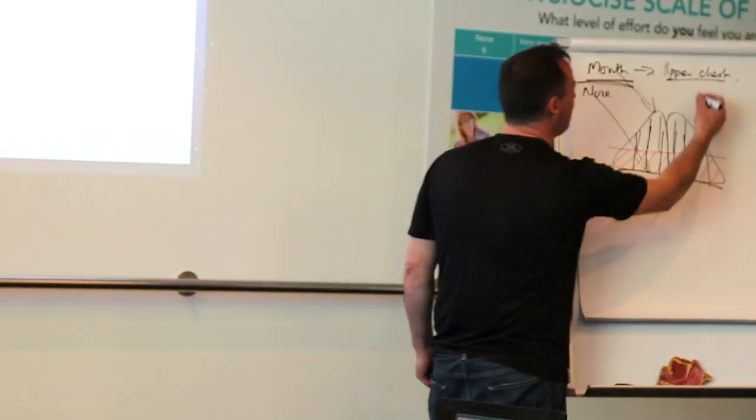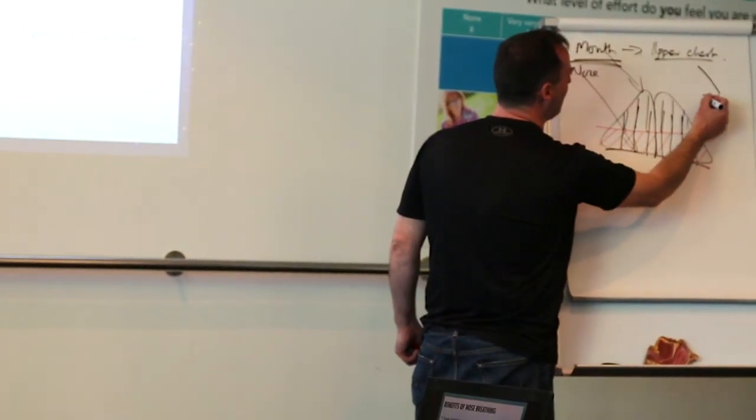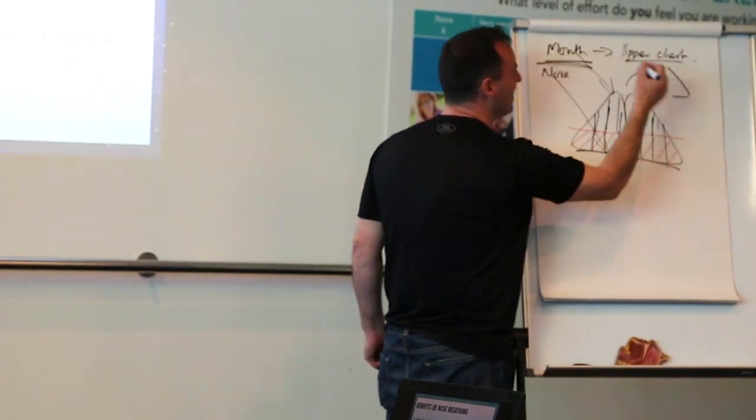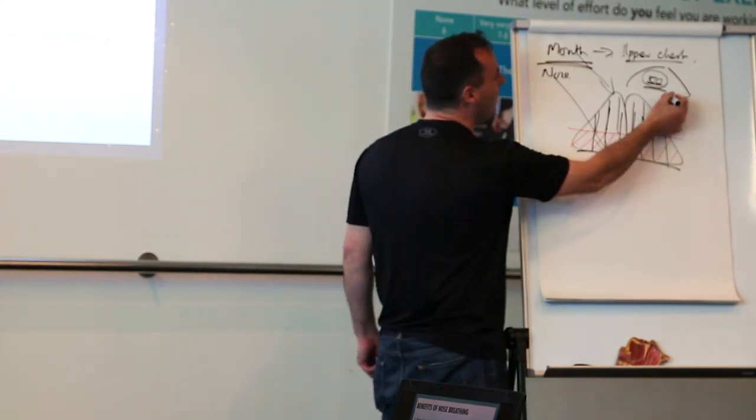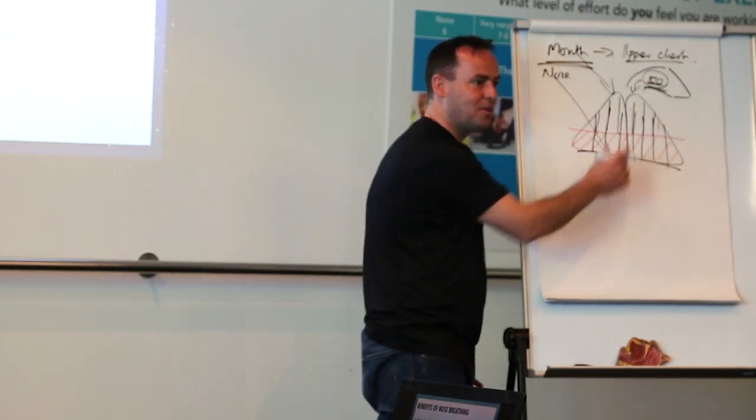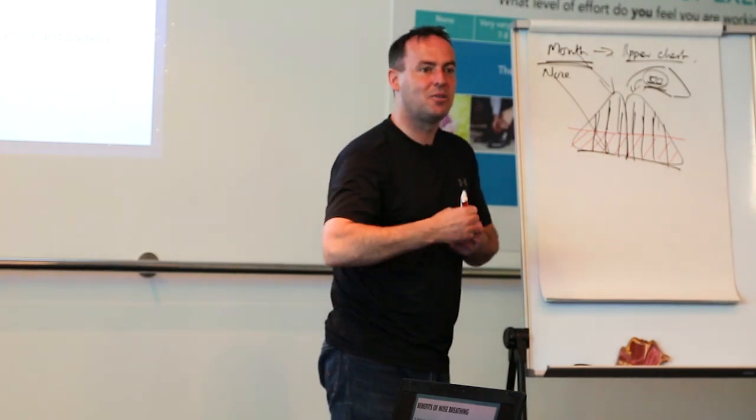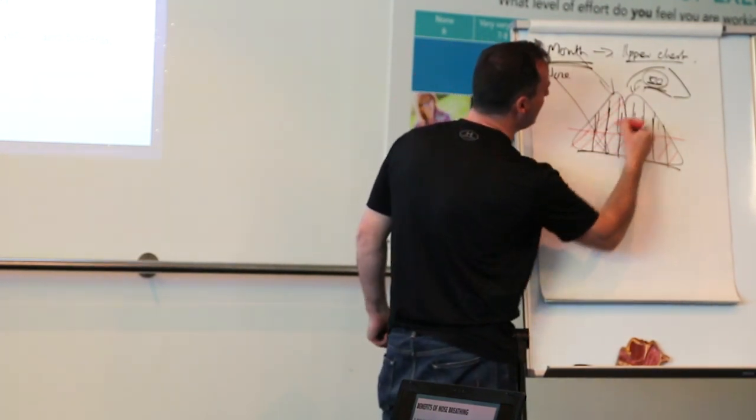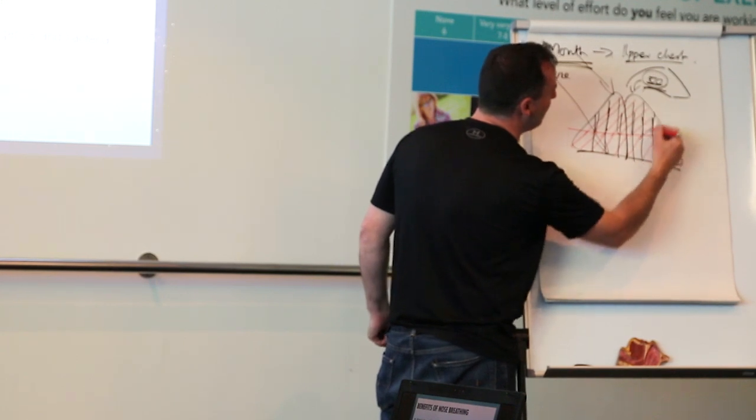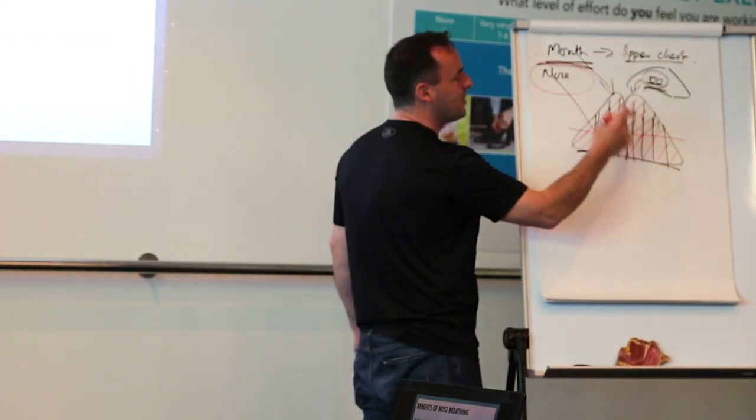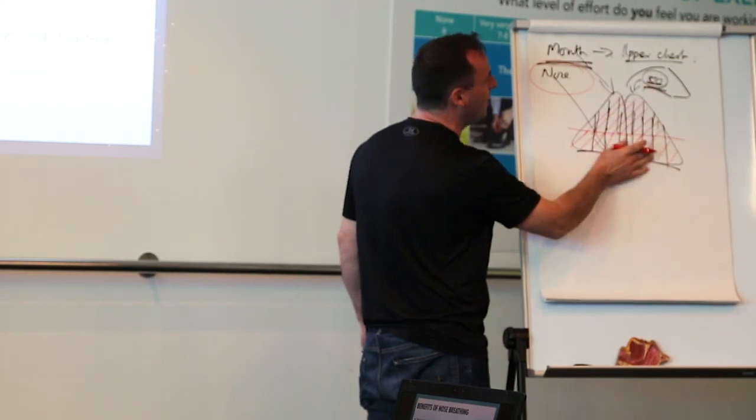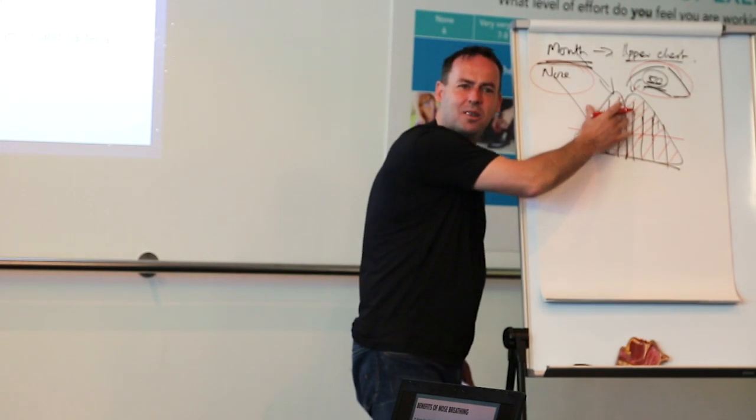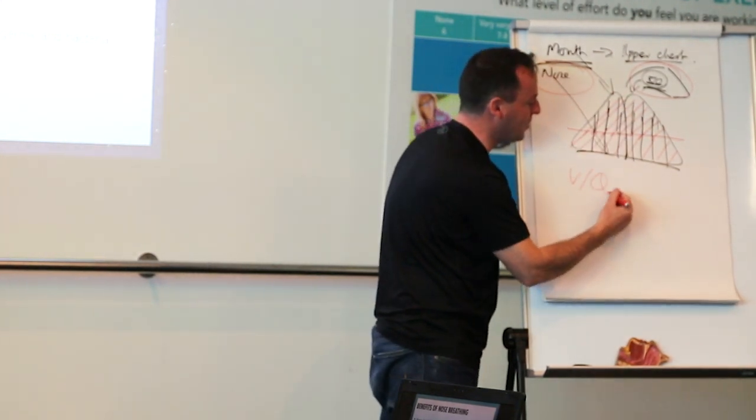When you breathe through your nose, you pick up nitric oxide. So you have your nose, your nasal cavity, your turbinates, and nitric oxide is released into the nasal cavity. You breathe through your nose, you carry nitric oxide into your lungs. And as you bring nitric oxide into your lungs, nitric oxide redistributes the blood from the lower lobes to the upper. So nose breathing brings the air from the upper to the lower, and nitric oxide brings the blood from the lower to the upper. Does that make sense? That's ventilation perfusion.